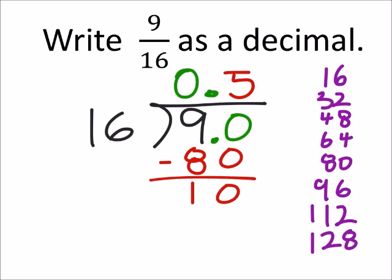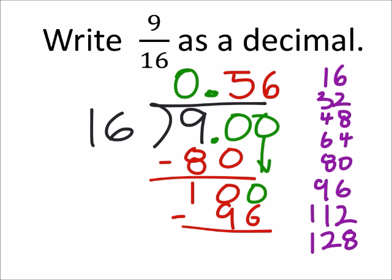16 doesn't go into 10, so I need another decimal which I'll drop and treat this as 100. How many times does 16 go into 100? 1, 2, 3, 4, 5, 6 - and this is the nice thing about that list. So now I'm going to subtract 6 times 16 is 96, and I get 4.